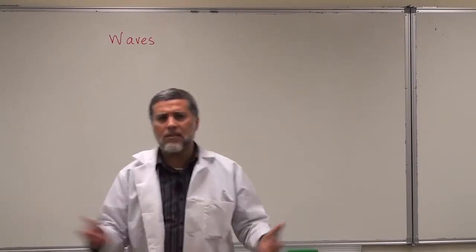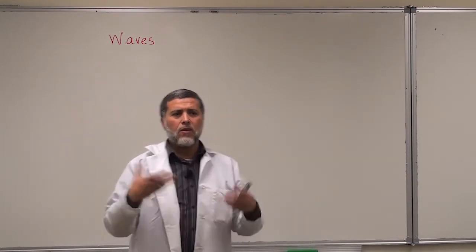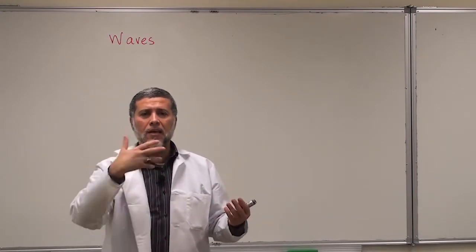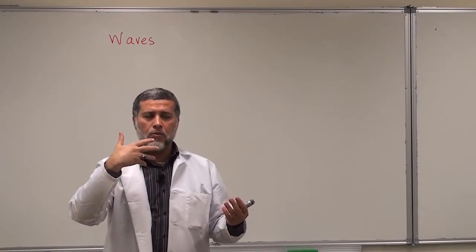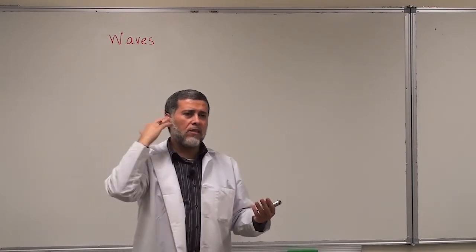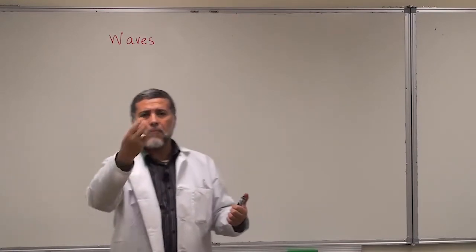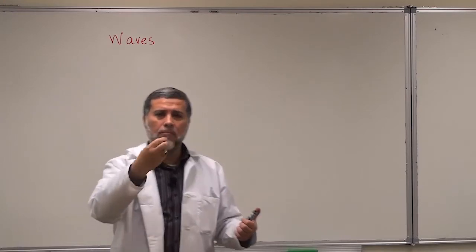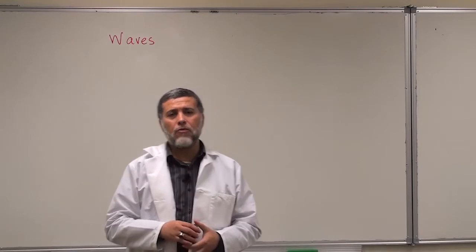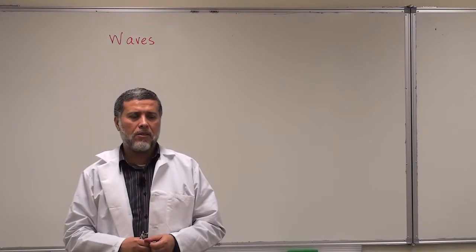An example of a mechanical wave is a sound wave. The source is your vocal cords, and the medium will be the air between me and you. You receive the sound in your ear, and the air particles transmit the sound wave. Another type of mechanical wave is the wave on a string, and we will see this in this course.